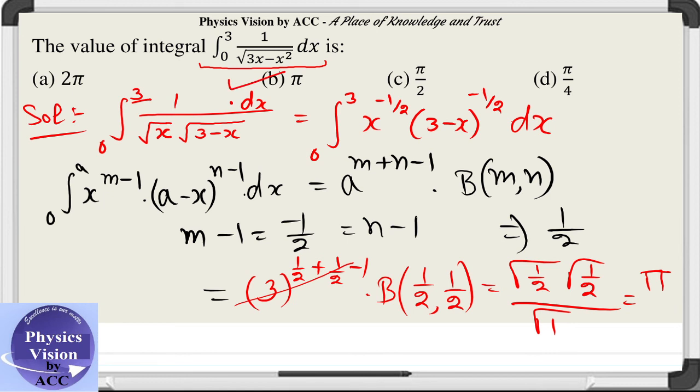Make sure you know the value of gamma half which is under root pi and we have used it here. This gives us option b as the correct answer.